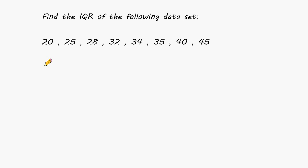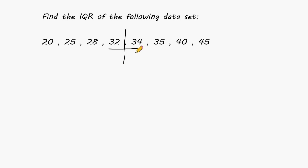Let's try another example. The first thing we have to do when finding the IQR is to place our data set in order from least to greatest, but this data set is already in order so we don't have to do that step. The next thing is to locate the median. Notice that we have an even data set — exactly eight numbers — so there is no single middle number. When that happens, you cut your data set in half and figure out what value would be in the middle of the two numbers that are in the middle. We have 32 and 34 here, and 33 would be in the dead center. We really just need the median as a boundary line to define a first half and a second half of the data set.